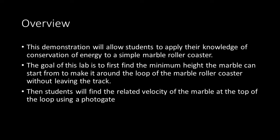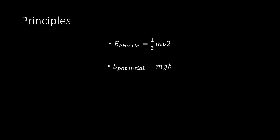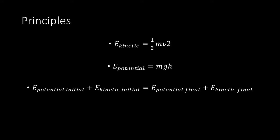Students will find the related velocity of the marble at the top of the loop using a photogate. Students should know that kinetic energy is equal to 1/2 mv² and potential energy is equal to mgh. Students must also know the conservation of energy: initial potential energy plus initial kinetic energy equals final potential energy plus final kinetic energy. Students must also know that initial energy plus work equals final energy, which applies in an open system.